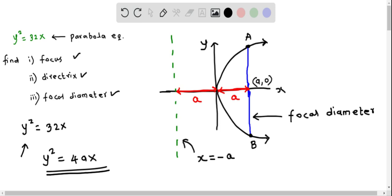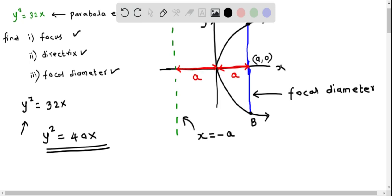Let's find the value of a. When you compare these two equations, we know that 4a = 32. This implies when we divide both sides by 4, we get a = 32/4, which equals 8.